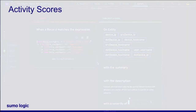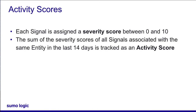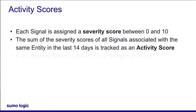Each signal is assigned a severity score between 0 and 10. An entity's activity score is the sum of all the severity scores associated with that entity from the last 14 days by default. Once an entity has an activity score of 12 or higher, the signals associated with it trigger an insight.